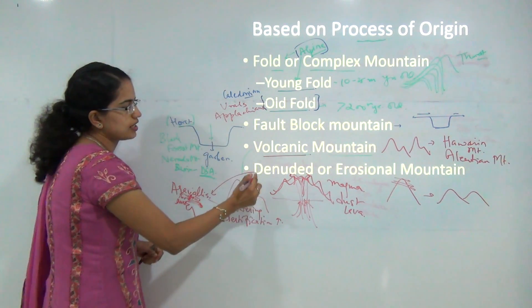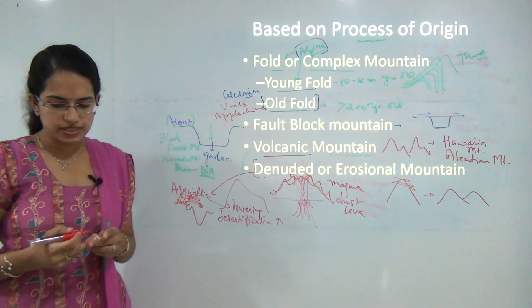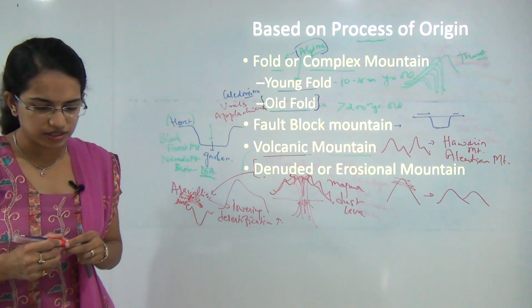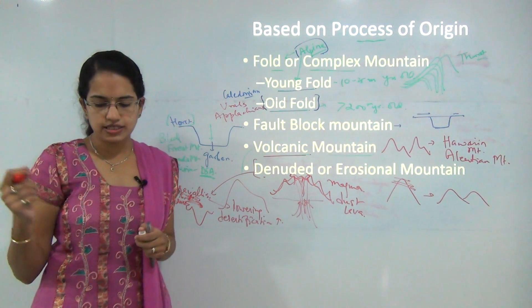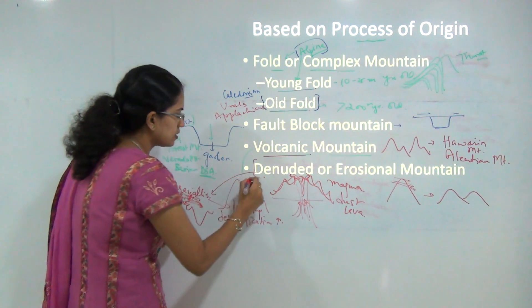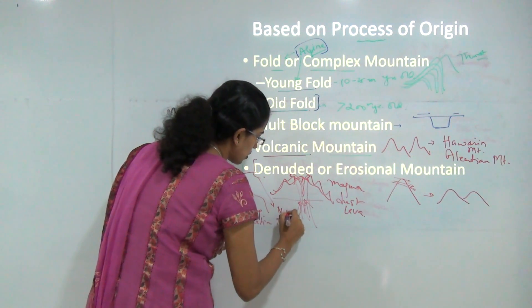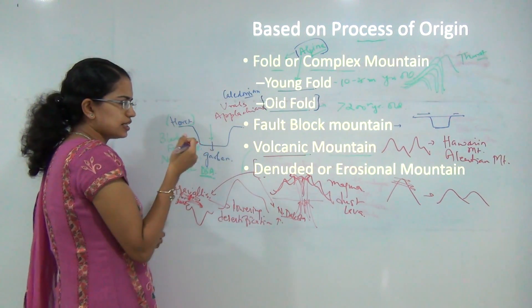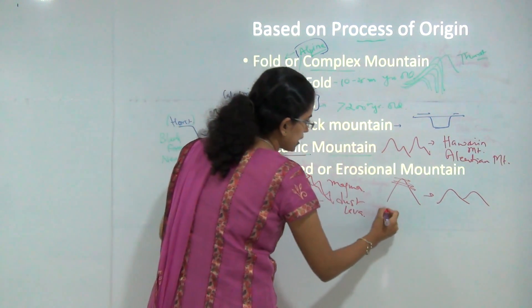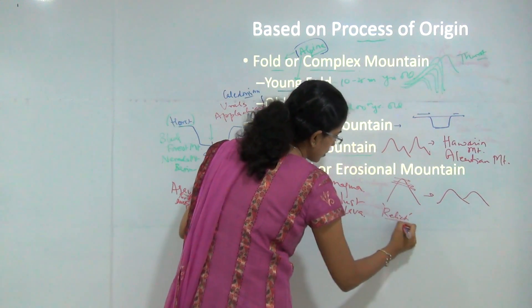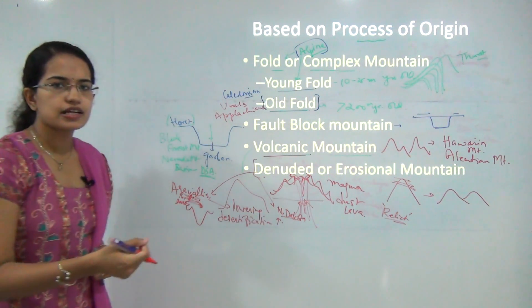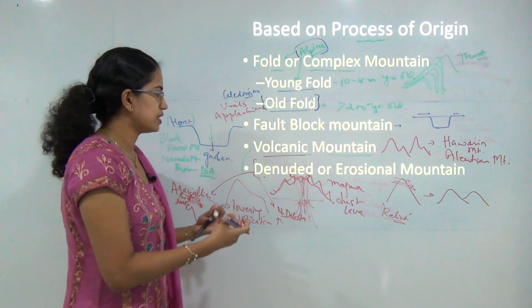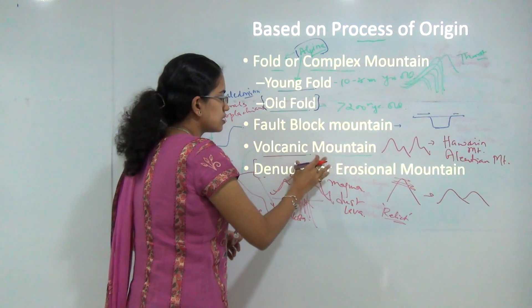This is one implication of the denuded or erosional mountain system. Other examples of denuded or erosional mountains include the mountain ranges in North Dakota. We also call these denuded or erosional mountains relic mountains, as ultimately they lose their significance in the process of mountain building. These are the basic mountains classified based on process of origin.